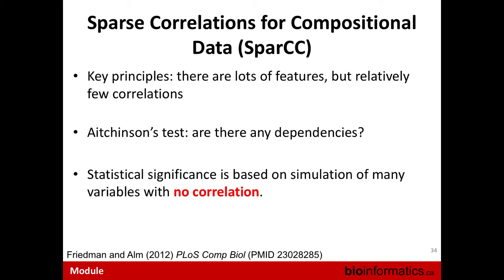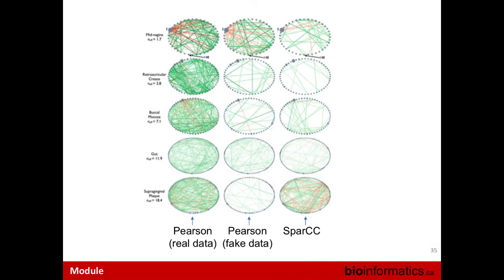Feel free to interrupt — if you have a question, you're guaranteed to not be the only person in the room with it. SPARCC — here's where the rubber hits the road. This figure from the SPARCC paper uses real data from five different body sites: mid-vagina, retroauricular crease, buccal mucosa, gut, and supragingival plaque. Each dot around the perimeter is a taxonomic group — I believe they're OTUs.